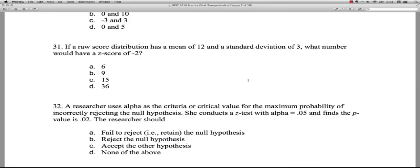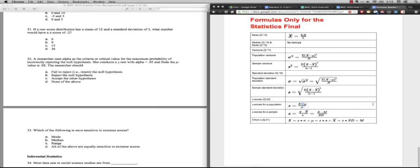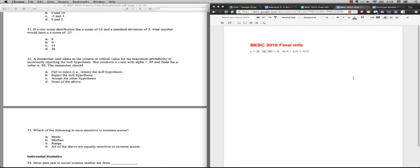Question 31. If a raw score distribution has a mean of 12 and a standard deviation of three, what number would have a z-score of minus two? All right. So in this case, we're actually going to start with a z-score and we're going to go to an x-score. Let's take a look at our formulas. We're going to be using this one because we're starting with a z-score and information about the sampling standard deviation, and we're going to go to an x-score.